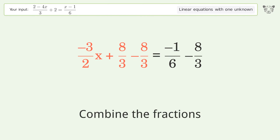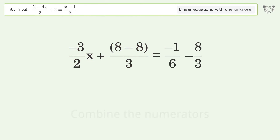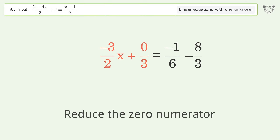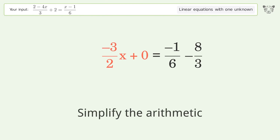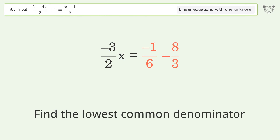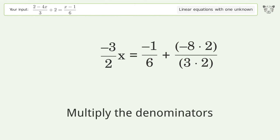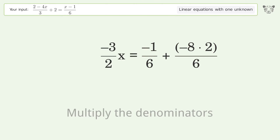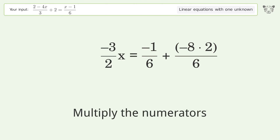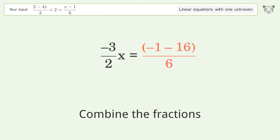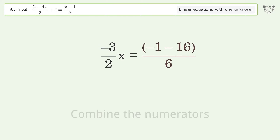Subtract 8 over 3 from both sides. Combine the fractions. Combine the numerators. Combine the numerators. Find the lowest common denominator. Multiply the denominators. Multiply the numerators. Combine the fractions. Combine the numerators.